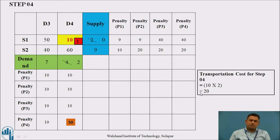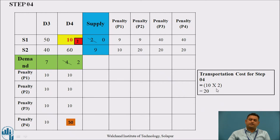For step 4, we find penalty 4. The penalties are 10, 50, 40, and 20 — the highest is 50, lying in destination D4. In D4, the costs are 60 and 10 — the smallest is 10. We balance the supply and demand. The transportation cost for this step is 10 into 2, which is 20.